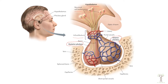The hypothalamus makes two specific molecules: oxytocin and antidiuretic hormone. They are produced in the hypothalamus and then stored in the axon terminals in the posterior pituitary gland. The posterior gland doesn't make any hormones itself. When these hormones are released from the synapse, they go into the bloodstream and then have their effect.